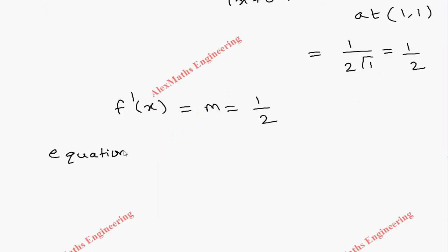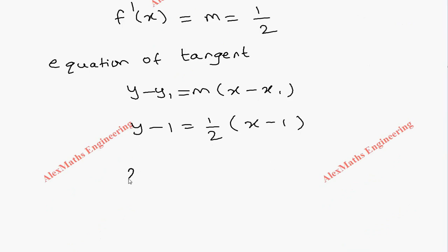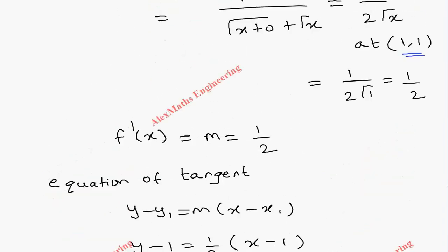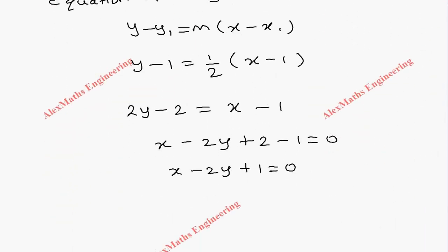Now using the equation of tangent formula y - y₁ = m(x - x₁), where (x₁, y₁) = (1, 1) and slope m = 1/2: y - 1 = (1/2)(x - 1). Multiplying through by 2: 2y - 2 = x - 1. Taking everything to one side: x - 2y + 1 = 0. This is the required equation of the tangent line.